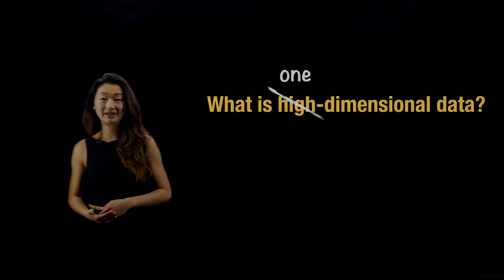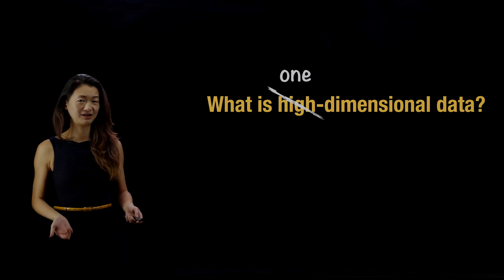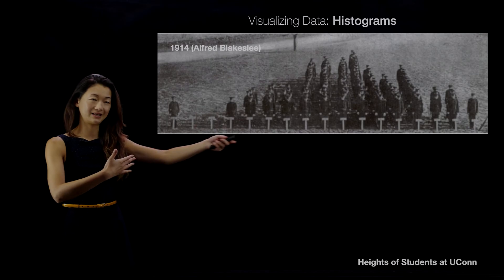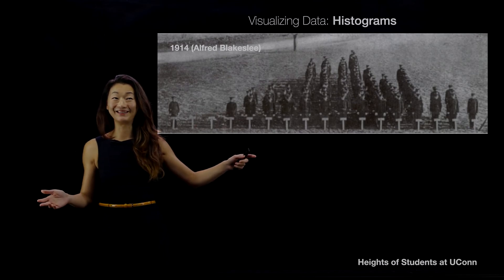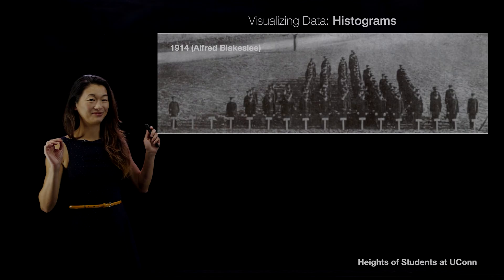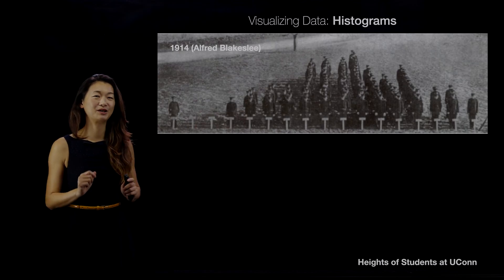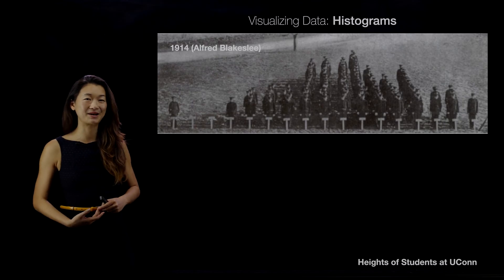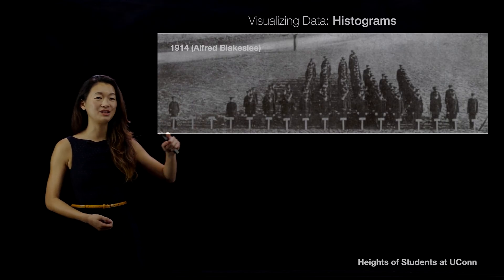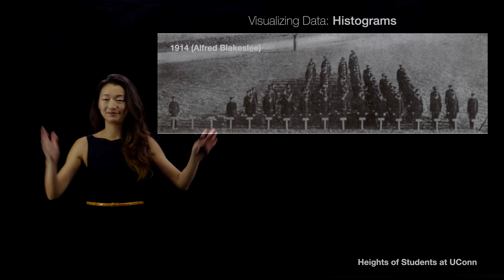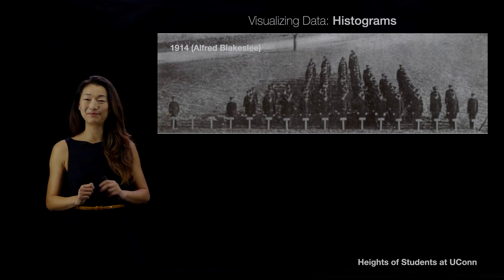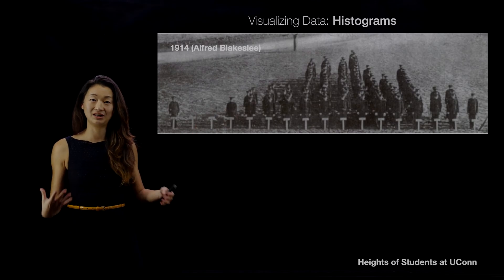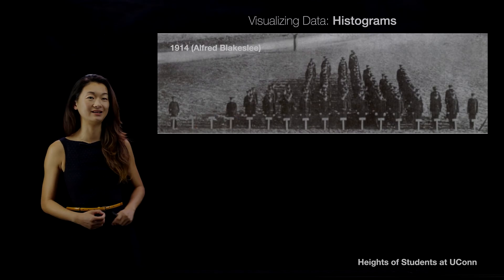To visualize one dimensional data — how tall people are — you don't even need a computer. In fact, this was done way before the age of computing, when people were visualized by their height by just having them line up on the football field, making a very real-life histogram of how tall people are. This is a picture from the University of Connecticut of students in the marching band in 1914, and each label shows how tall they were.